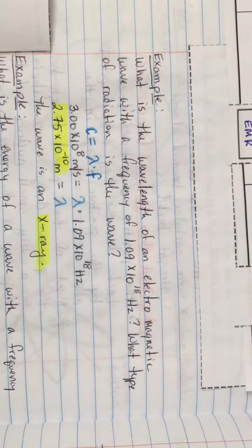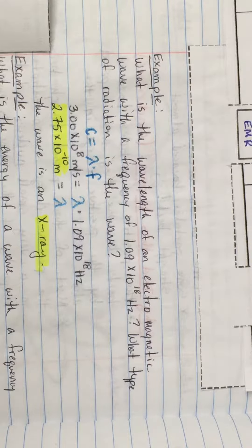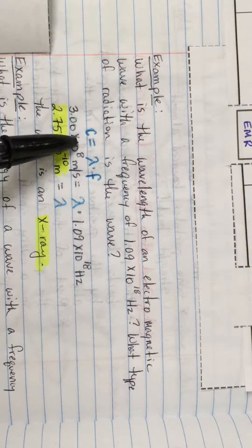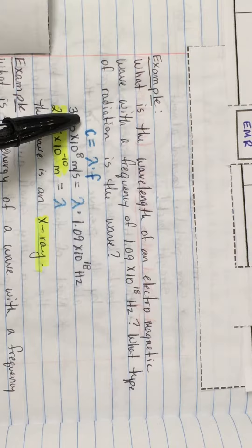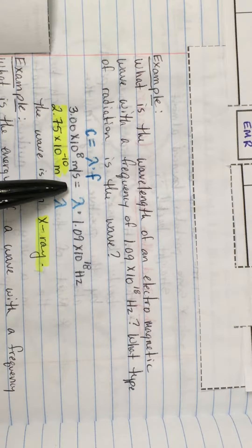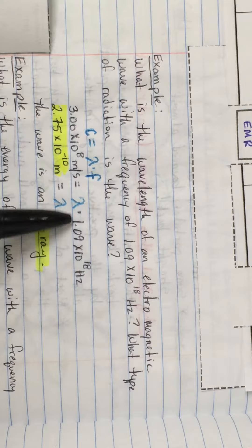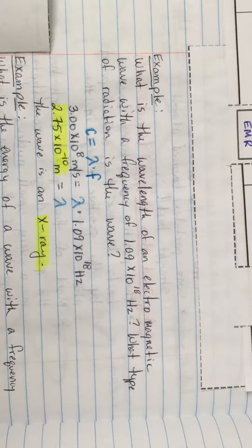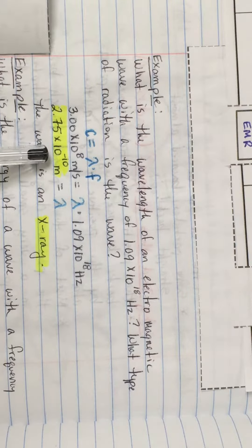On the left side of your notebook we're going to look at an example. The problem reads: what is the wavelength of an electromagnetic wave with a frequency of 1.09 times 10 to the 18th hertz? Because we're given frequency and we know it's an electromagnetic wave, we can determine the wavelength using the formula c is equal to lambda times f. The speed of light, 3.00 times 10 to the eighth meters per second, is equal to the wavelength times the frequency, 1.09 times 10 to the 18th hertz. Dividing both sides by 1.09 times 10 to the 18th hertz, our resulting wavelength is 2.75 times 10 to the negative 10th meters.